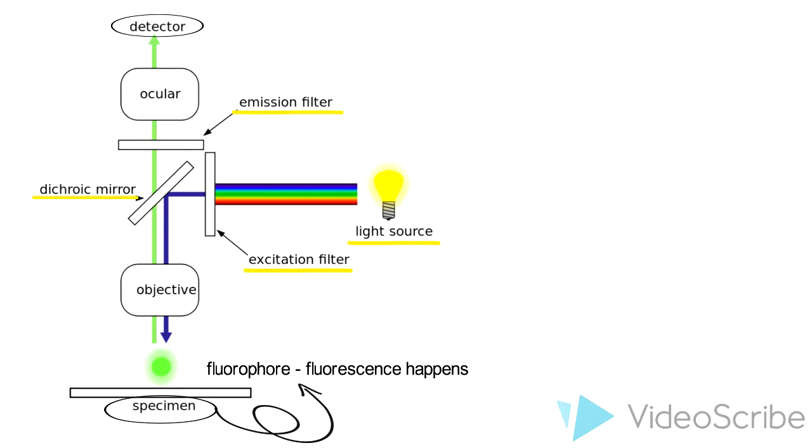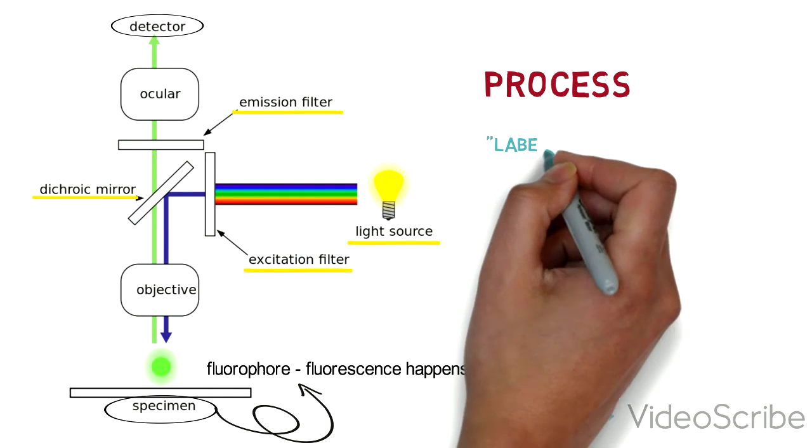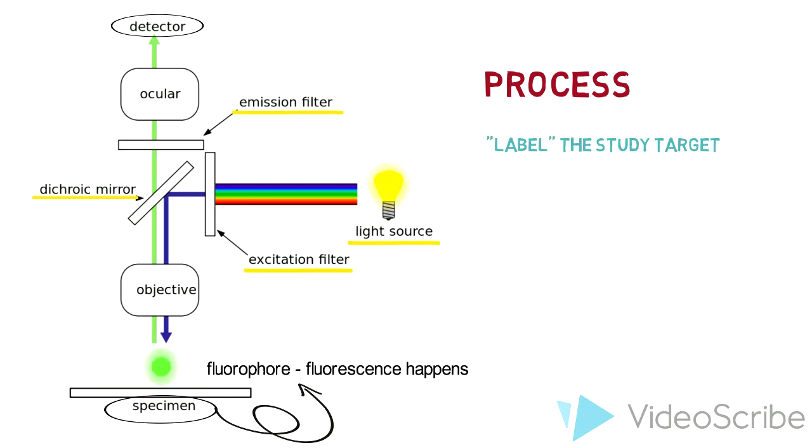So how does this technique work? Basically, there are two main steps. First, label the study target by attaching fluorescent marks to it. The study subject can either be a protein or a part of a cell or even a whole cell. There are different kinds of fluorophore marks which can specifically attach to different parts of cells. Or we can even make the fluorophore attach to DNA and it can duplicate itself when the cell duplicates.